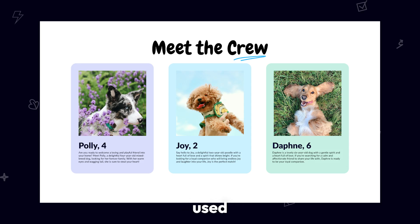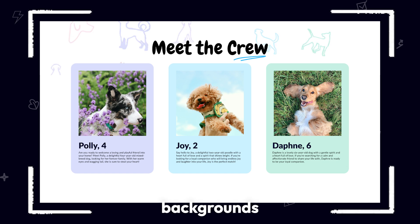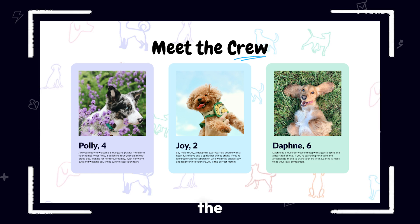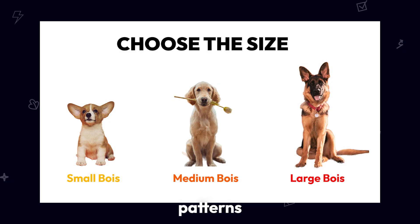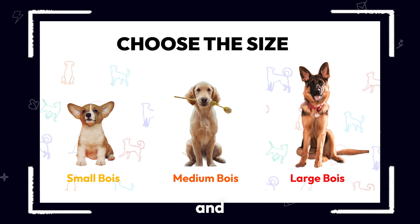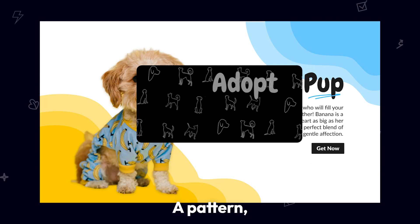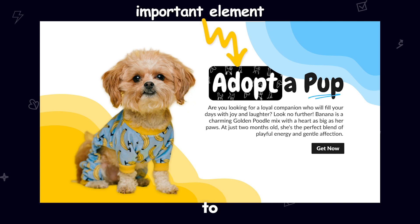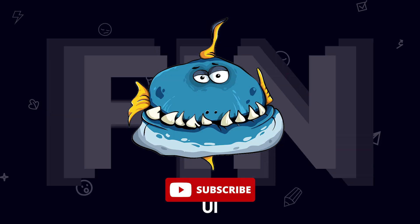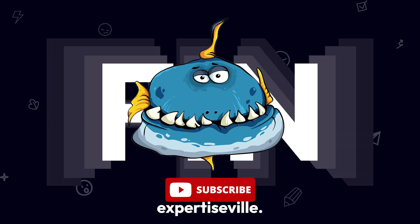Backgrounds: patterns can be used as backgrounds to add texture and definition to a page, setting the tone for the overall design. Section Dividers: use patterns to differentiate between different sections and make content easier to digest while adding visual interest. Highlighting: a pattern, border, or background can draw attention to important elements. And you should be right on your path towards UI expertise.